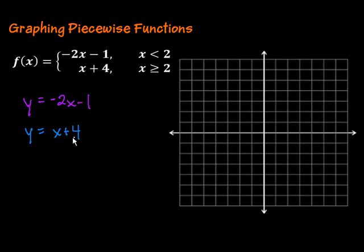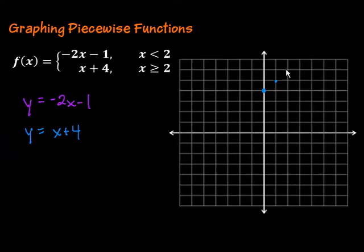I'm going to go ahead and graph this one first. The y-intercept is the b, so we're going to start at 4 on the y-axis. There's our first point. Then we use the slope, which in this case is 1. So we're going to go up 1 over 1 — rise over run — up 1 over 1, up 1 over 1, like so. That'll represent this equation right here.